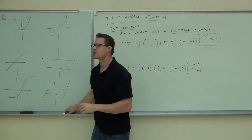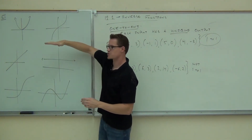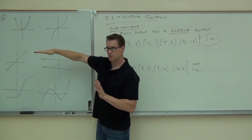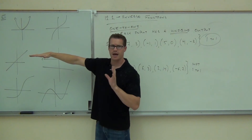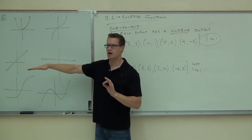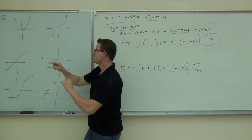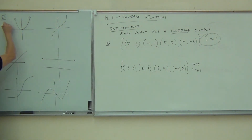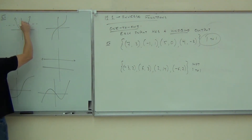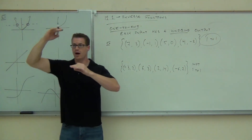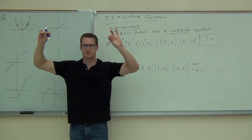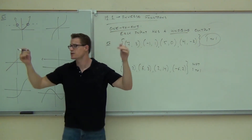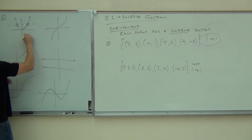The horizontal line test says: instead of a vertical line, use a horizontal line. If any horizontal line touches the graph at more than one spot, it's not 1-to-1. Here's the reason: if a horizontal line touches the graph at two spots, that means you have the same output twice. So this graph is not 1-to-1.